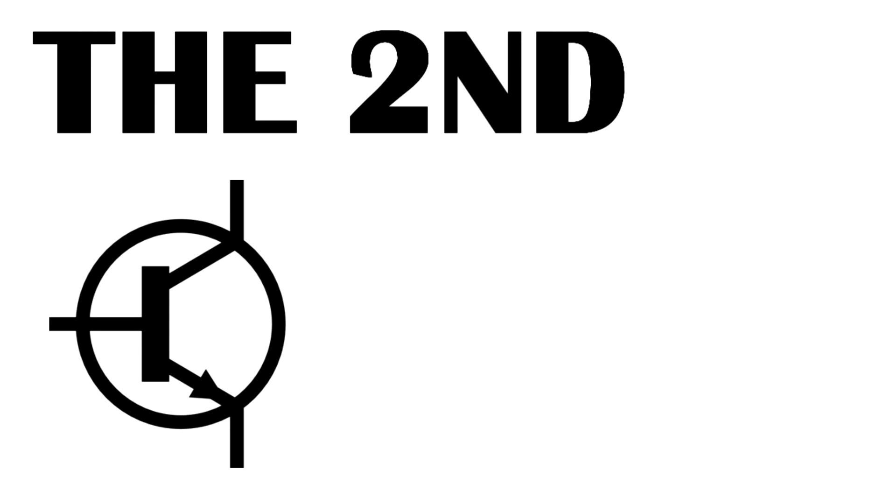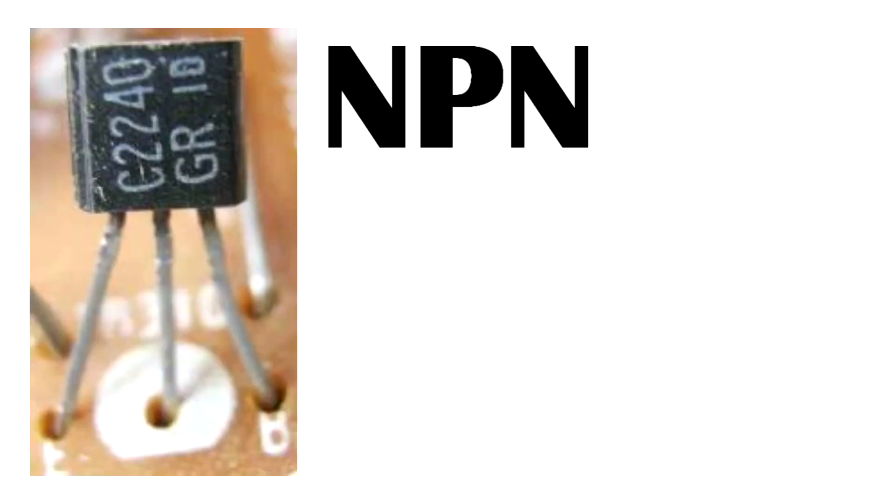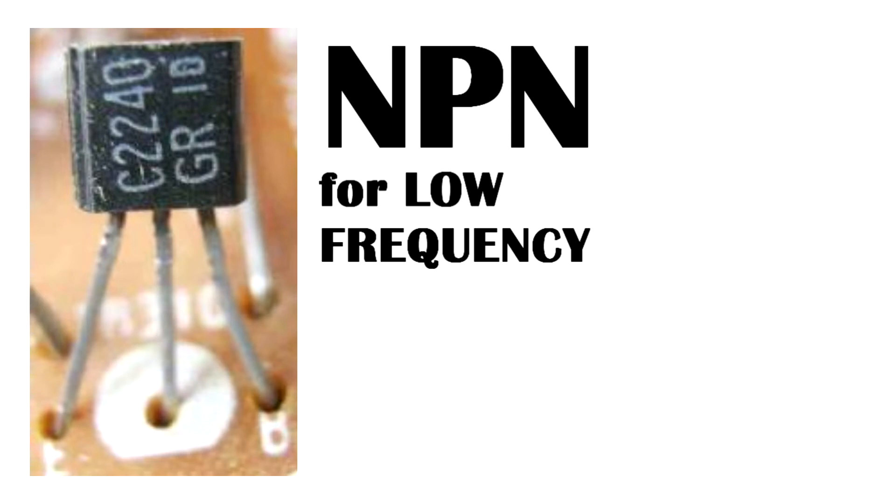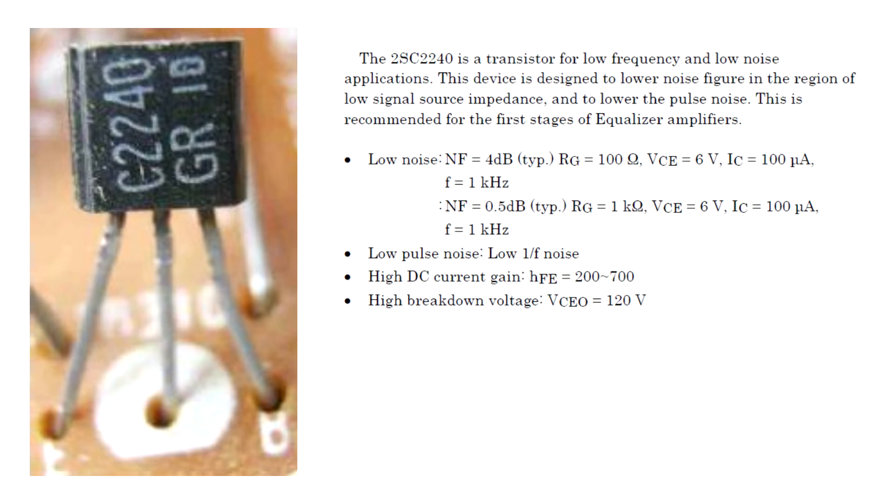The second transistor on my list is 2SC2240 which is an NPN transistor for low frequency and low noise audio amplifier application. This device is designed to lower noise figure in the region of low signal source impedance and to lower the pulse noise. This is recommended for the first stage of equalizer amplifier.